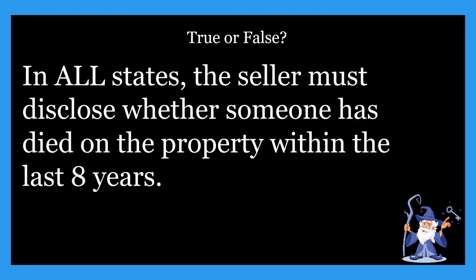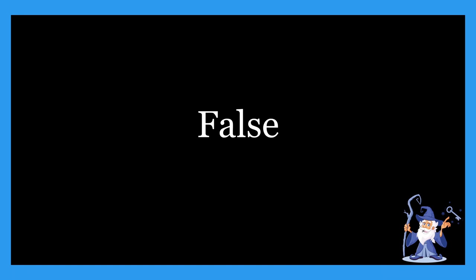Next one: in all states, sellers must disclose whether someone has died on property within the last eight years. Is that statement true or false? This one is going to be false — because it varies per state. In some states you have to disclose whether someone died on a property within the last eight years; in others you do not. You have to be familiar with your state laws. If you're not familiar, look into state-specific coursework or study guides so you understand these laws.